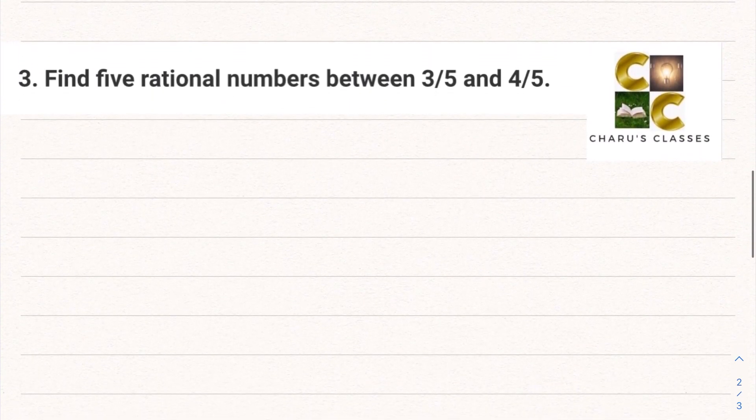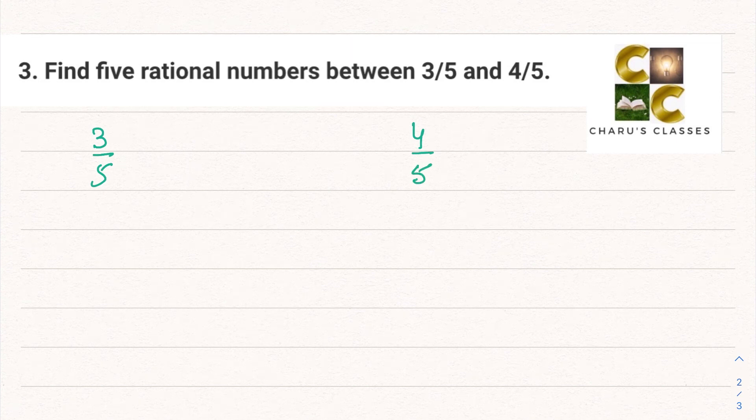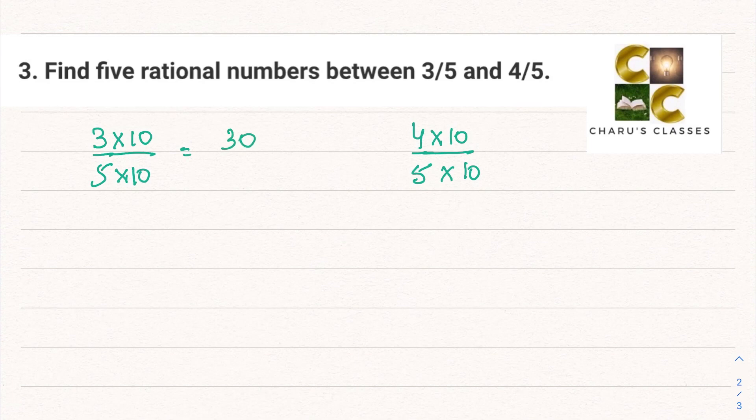Question number 3: Find five rational numbers between 3 by 5 and 4 by 5. Again, I can multiply the numerator and denominator by 10. This gives me 30 by 50 and 40 by 50.